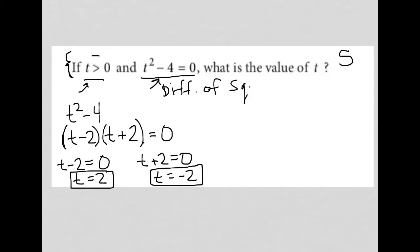So this is where this bit of information comes in as being important, because we're told from the very beginning that t is greater than 0, which means t equaling negative 2 is not what we want. We want the value where t is greater than 0 or t is equal to 2. So the answer to this question would be 2. Thank you.